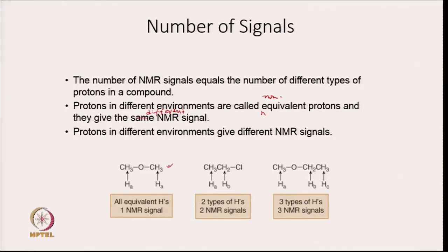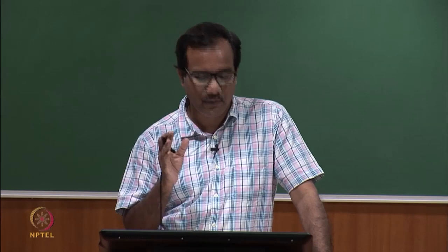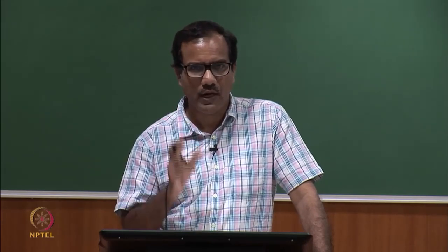For example, take dimethyl ether — all six protons have the same environment. Any one proton is attached to one carbon, which is attached to one oxygen, which is again attached to one carbon. So the environment of any proton in dimethyl ether is the same, meaning there is only one kind of environment and you get one NMR signal.